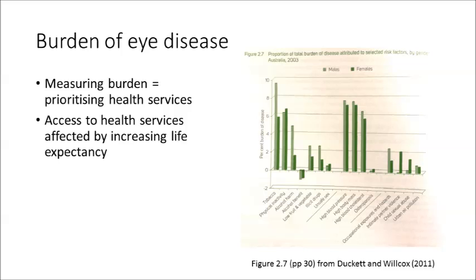Access to healthcare services will also be affected by increasing life expectancy. However, when considering life expectancy, we can't simply consider additional years of life lived, but also how many of those years you could live with a disability. Figure 2.7 on page 30 from Duckett and Wilcox, which is shown on the slide here, shows that improvement in life expectancy is associated with living longer with having a disability.